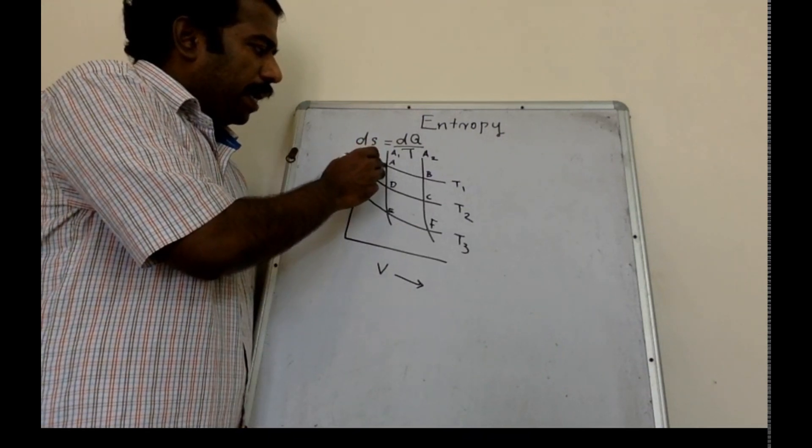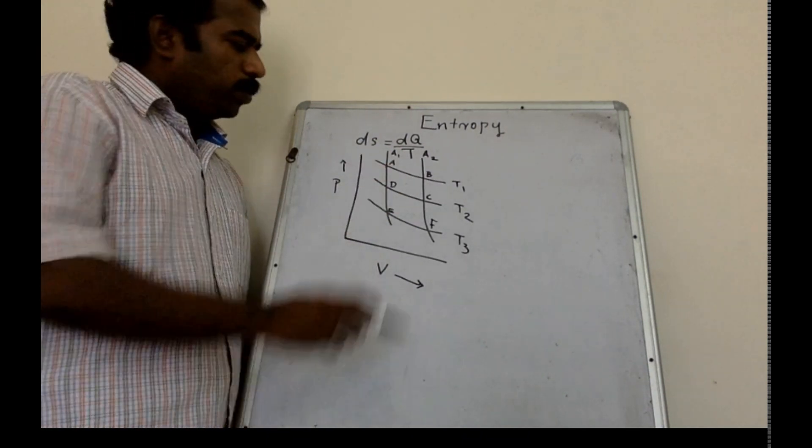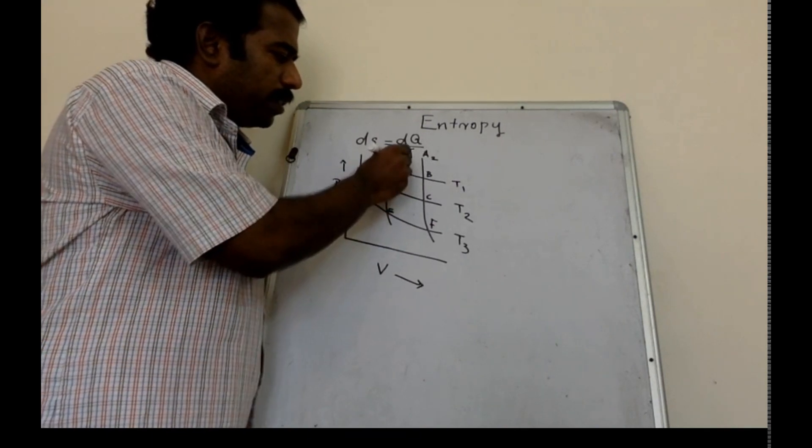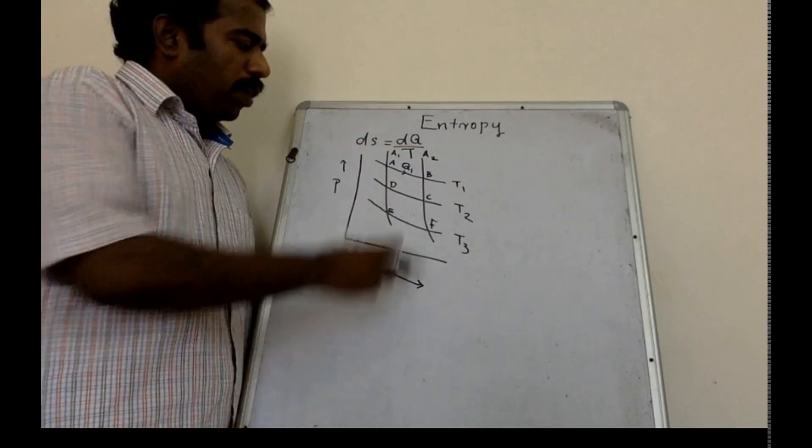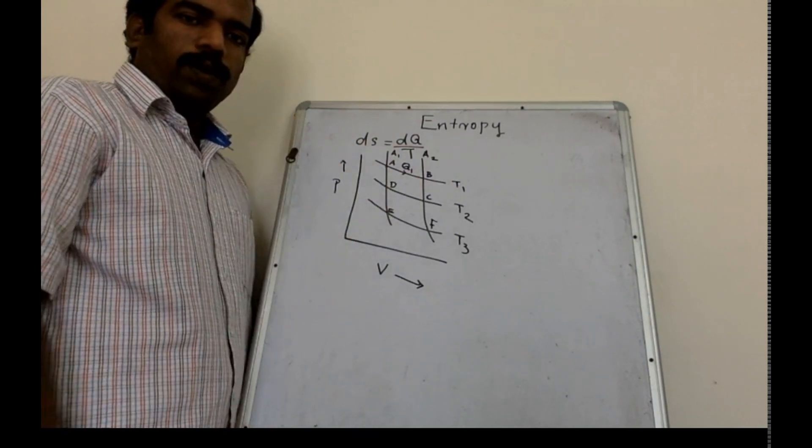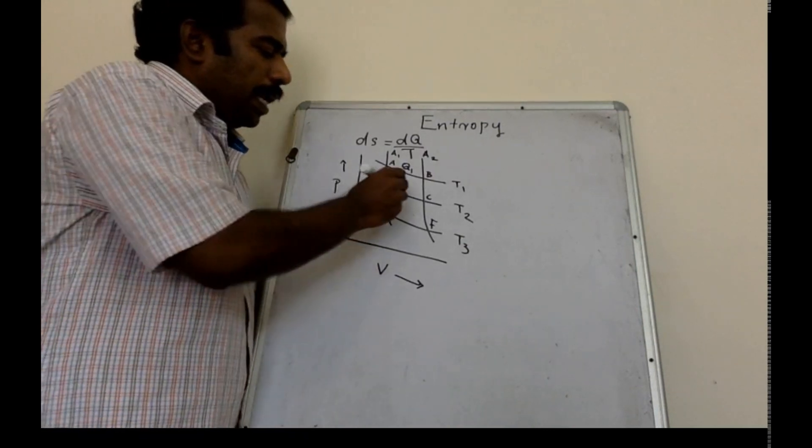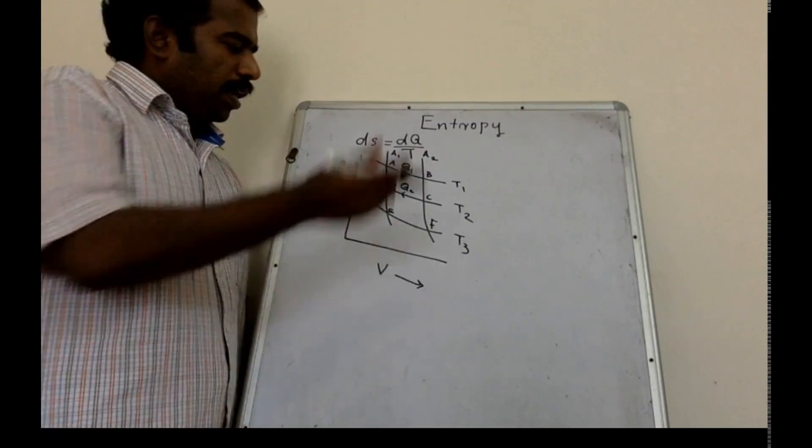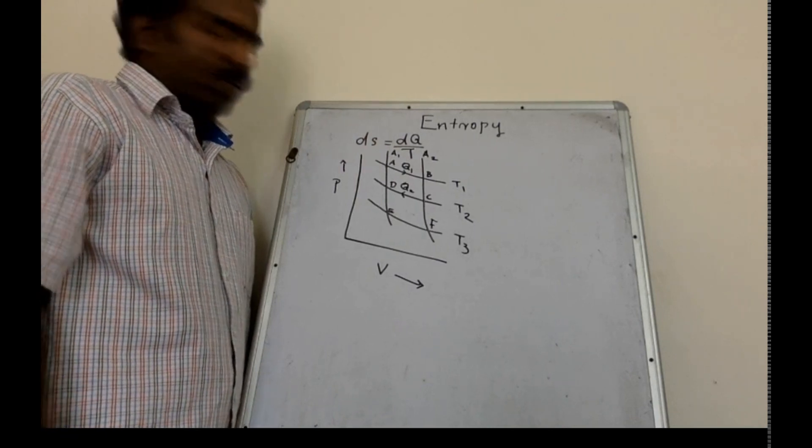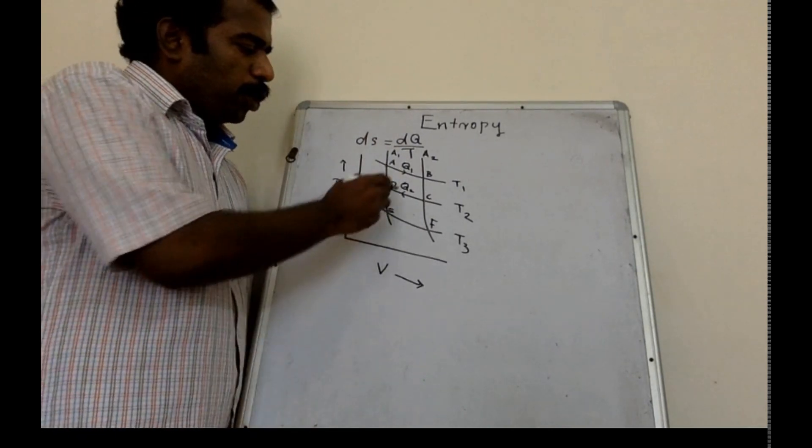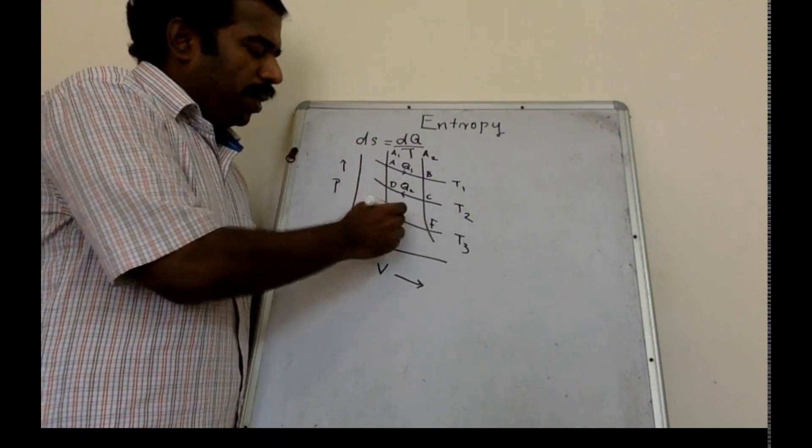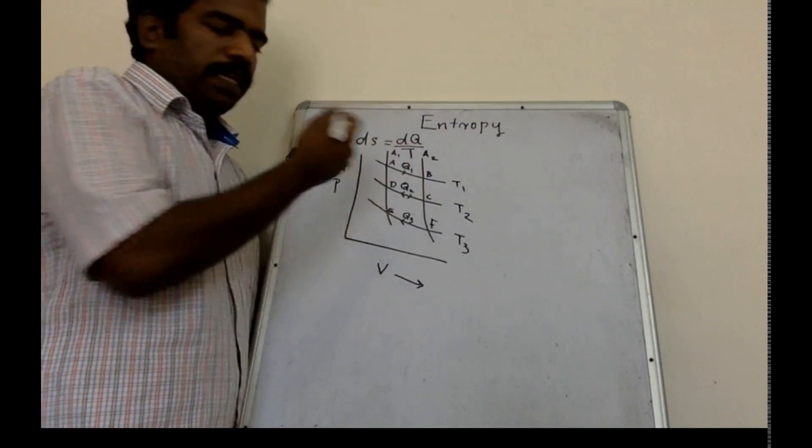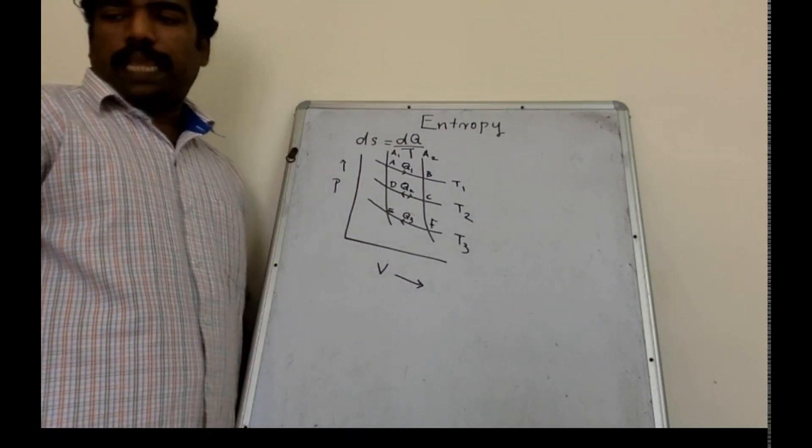From the adiabatic A1 to adiabatic A2, you can see isothermal expansion, which means an amount of heat Q1 is absorbed here. Coming from adiabatic A2 to A1, this is isothermal compression, during which an amount of heat Q2 is rejected to the sink. Along DC, Q2 is the heat it absorbs, and along FE, Q3 is the heat it rejects.